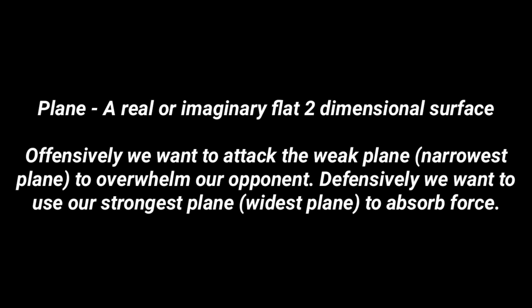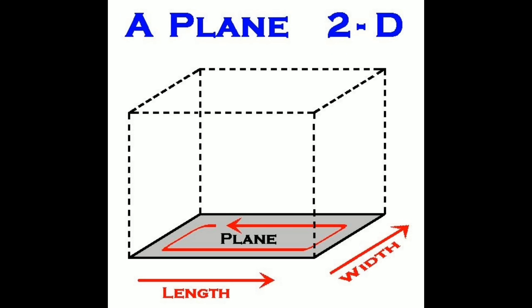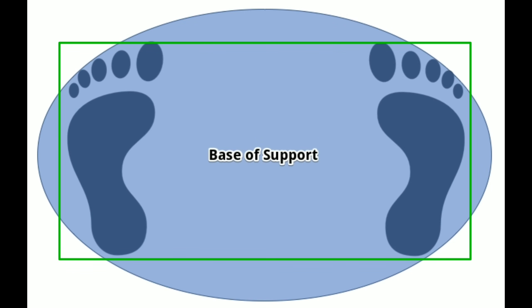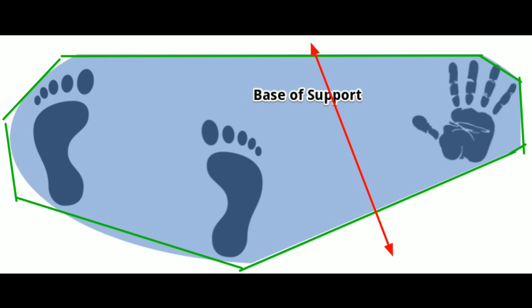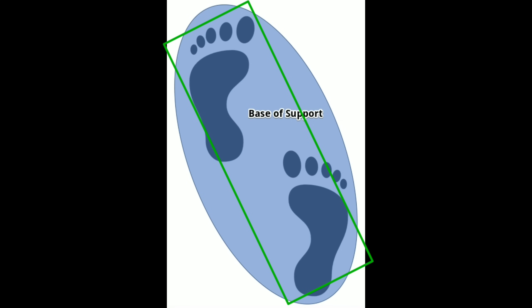A plane is a real or imaginary flat two-dimensional surface. Offensively, we want to attack the weak plane — the narrowest plane — to overwhelm our opponent. Defensively, we want to use our strongest plane — the widest plane — to absorb force. The goal is to attack the smallest surface area possible. In a square stance, the plane is a rectangle — we're able to absorb force from the left and right because of its width, but it's not effective at absorbing force front to back. When the plane is extended, a ton of force can be absorbed left to right, and there is an actual weak side of the plane where we're able to drive at a dead angle — we're always trying to attack the narrowest part.